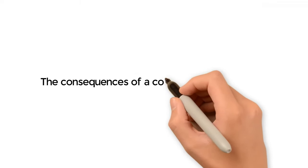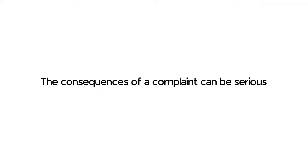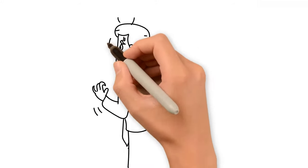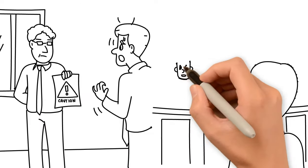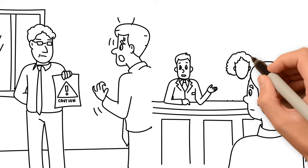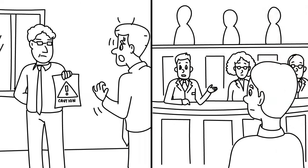Two: The consequences of a complaint can be serious. The Complaints Committee might issue you a caution or ask you to take a course. You may even be referred to the Discipline Committee. In some cases, the decision may become public.